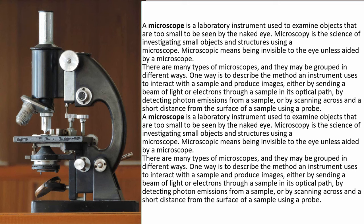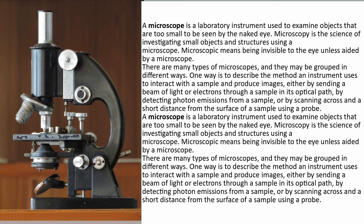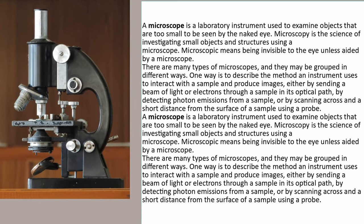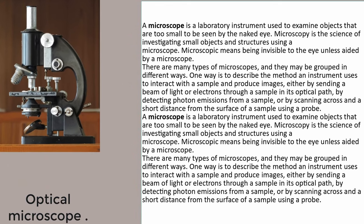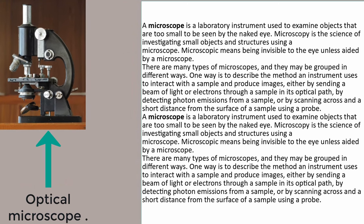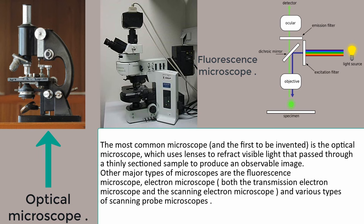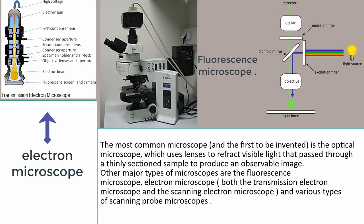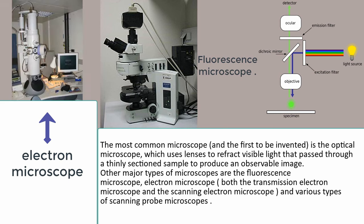A microscope is a laboratory instrument used to examine objects that are too small to be seen by the naked eye. Microscopy is the science of investigating small objects and structures using a microscope. Microscopic means being invisible to the eye unless aided by a microscope. There are many types of microscopes, and they may be grouped in different ways. One way is to describe the method an instrument uses to interact with a sample and produce images, either by sending a beam of light or electrons through a sample in its optical path, by detecting photon emissions from a sample, or by scanning across and a short distance from the surface of a sample using a probe. The most common microscope, and the first to be invented, is the optical microscope, which uses lenses to refract visible light that passed through a thinly sectioned sample to produce an observable image. Other major types of microscopes are the fluorescence microscope, electron microscope, both the transmission electron microscope and the scanning electron microscope, and various types of scanning probe microscopes.